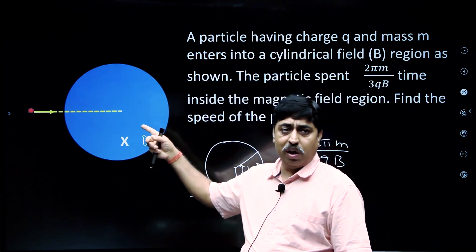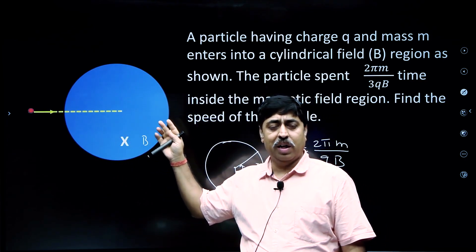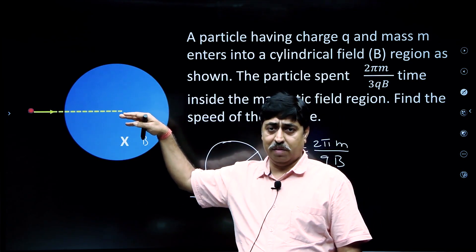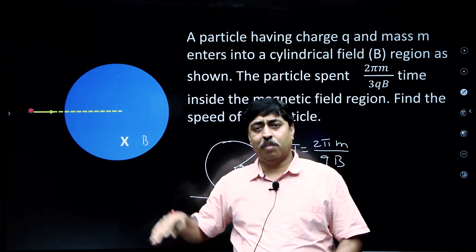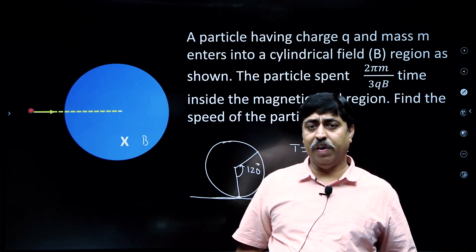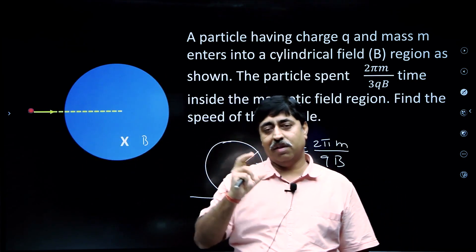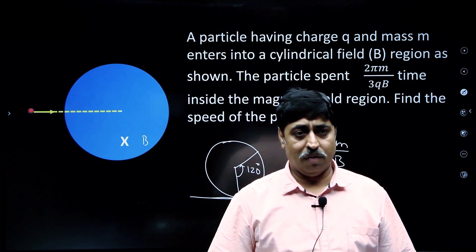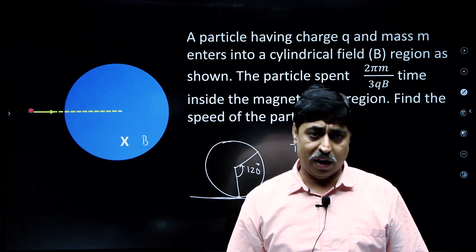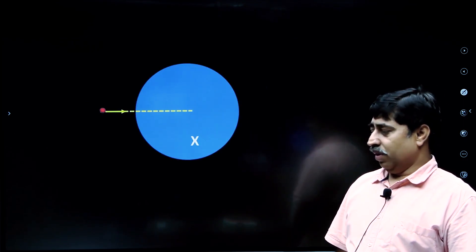After rotating through an angle of 120 degrees it exits the magnetic field region, because in this particular question, magnetic field is not present everywhere — it is present just inside this circular section. If you want to give it a try, please pause the video. Here is the solution.